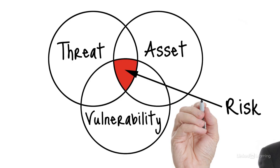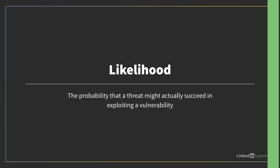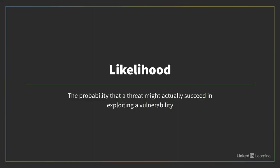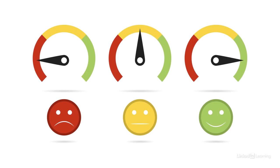During your risk assessment, you'll identify the threats and vulnerabilities the organization should be concerned about, and then you'll score the potential likelihood and potential impact of each risk. Likelihood is the probability that a threat might actually succeed in exploiting a vulnerability. For example, what's the likelihood that your laptop will get infected with a virus? It depends on whether you run an antivirus program, use your laptop to access the internet, or open email attachments from people you don't know. As you ask relevant questions about each threat and how exposed you might be to different attack vectors, it should become apparent whether the risk is highly likely to do harm, highly unlikely, or somewhere in between.